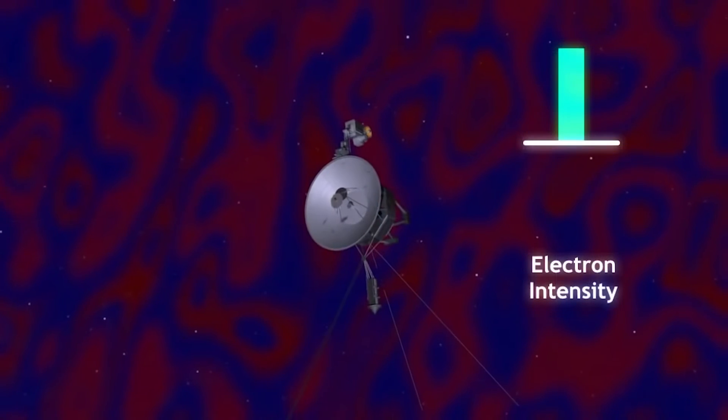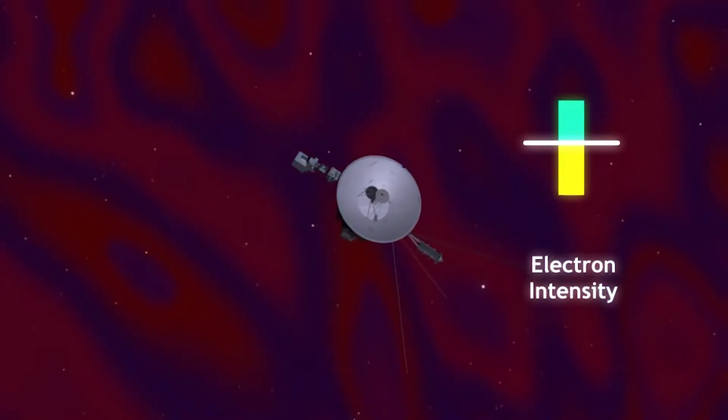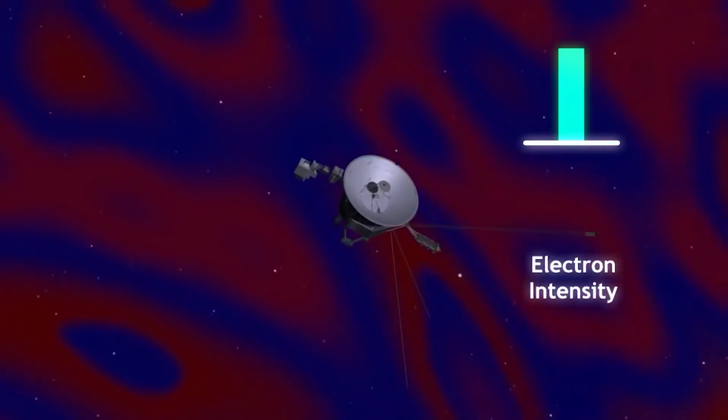IBEX recorded brighter ENAs over the same course of many months in 2014, indicating asymmetries in the heliopause, which were subsequently found to be at odds with the models.